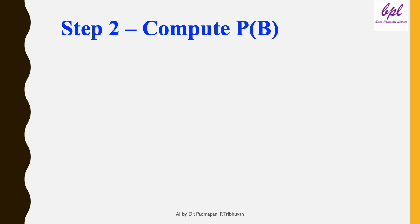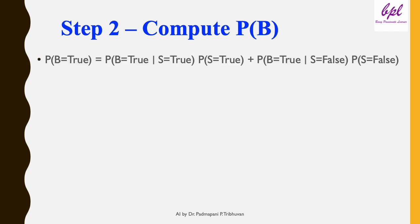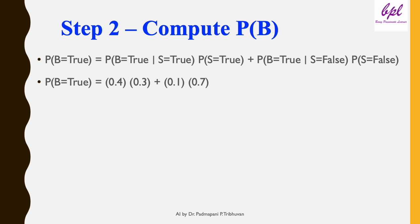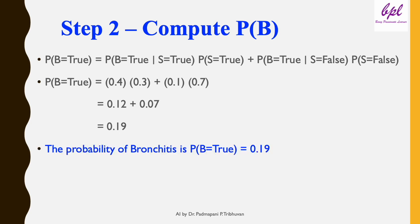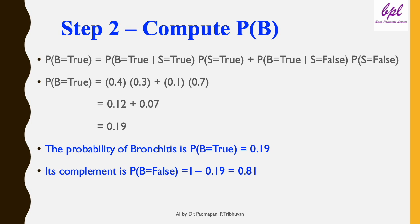Next, let's calculate the marginal probability of bronchitis using the formula: P(B=true) = P(B=true | S=true) × P(S=true) + P(B=true | S=false) × P(S=false). Substituting the values: P(B=true) = 0.4 × 0.3 + 0.1 × 0.7 = 0.12 + 0.07 = 0.19. So the probability of bronchitis is P(B=true) = 0.19, and its complement is P(B=false) = 1 − 0.19 = 0.81.